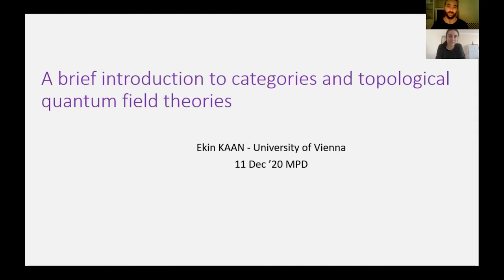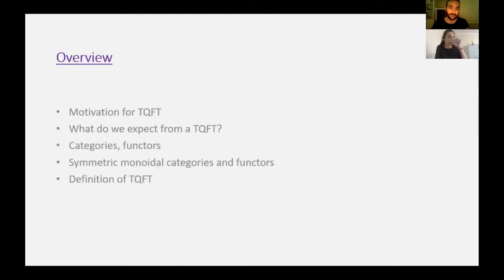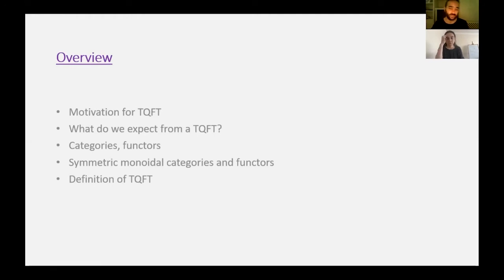Hello everyone. As Naci said, I will be talking about categories and topological quantum field theories. There is a lot to cover, so let's quickly get started. First, let me mention the overview. I will start with motivation for TQFT. After giving some motivation for TQFT, I will ask the question: what do we expect from a topological quantum field theory? And to understand this, I will give some examples of quantum field theory and we will try to guess what TQFT can be. And later, I will try to define topological quantum field theories.